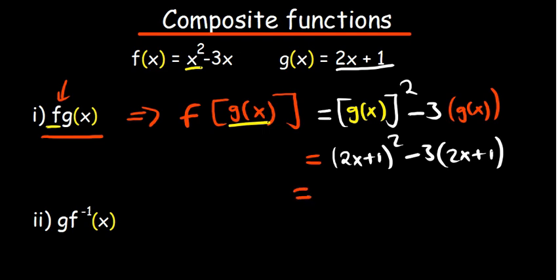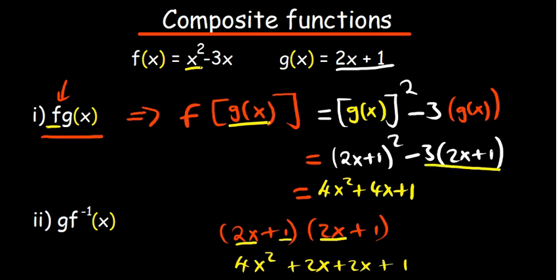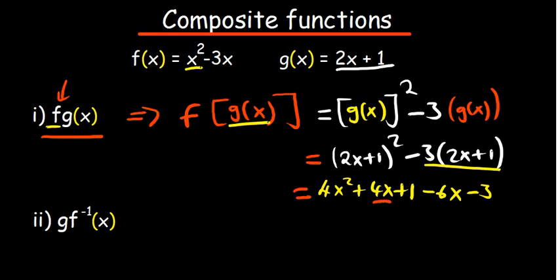So (2x + 1) squared means (2x + 1) multiplied by (2x + 1). Expanding: 2x times 2x gives 4x squared, 2x times 1 gives 2x, 1 times 2x gives 2x, and 1 times 1 gives 1. So we have 4x squared plus 4x plus 1. Now we bring in the minus 3: negative 3 times 2x is minus 6x, and negative 3 times 1 is minus 3. Collecting like terms: 4x minus 6x is minus 2x, and 1 minus 3 is minus 2.